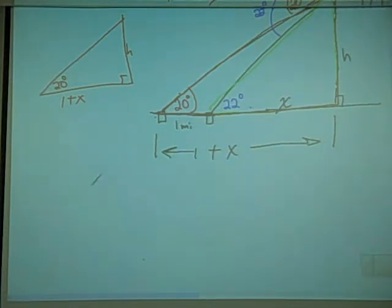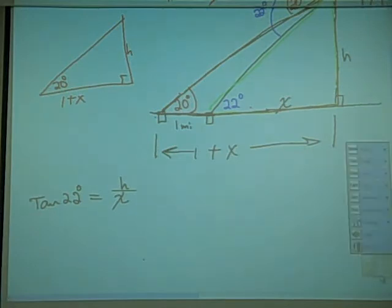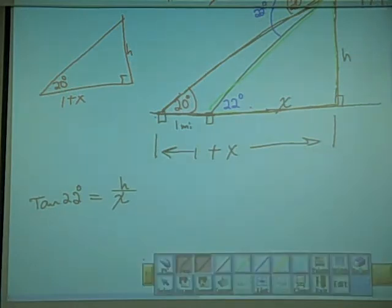Okay, we know that tangent would be opposite over adjacent. So we could say tangent 22 degrees is equal to the hypotenuse over x. So if we were to solve for x, basically what we could do here is we could multiply both sides times x, multiply by x on both sides. And of course these x's would cancel.